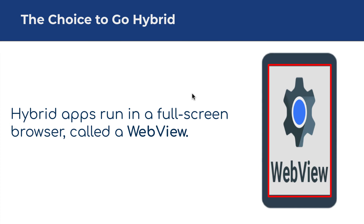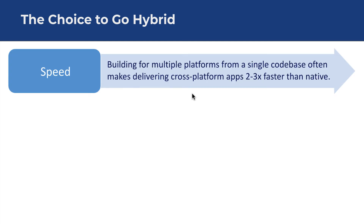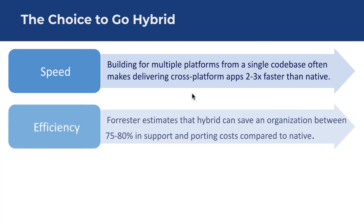The top reasons for making the switch from native to hybrid, based on independent research and testimonials, are: Speed — building for multiple platforms from a single code base often makes delivering cross-platform apps two to three times faster than native. Efficiency — Forrester estimates that hybrid can save an organization between 75% to 80% in support and porting costs compared to native.